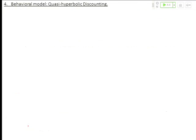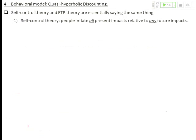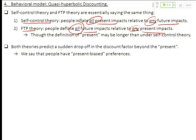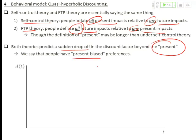Okay, so we have some psychology that suggests that people discount the future and inflate the value of the present. Here's how we can get that into our model. These two theories, self-control theory and future-time perspective theory, are saying the same thing. They're saying it in different ways. Self-control theory says people inflate present impacts relative to any future impacts. The present matters more because I can't really visualize, sorry, self-control theory, which is about temptation, says that I inflate present impacts because they're tempting. Future-time perspective theory says that people deflate all future impacts relative to any present impacts. These things are, and it's actually the same thing. Psychologically, they're very different, but in terms of just this basic inflation and deflation, they're the same. Both theories predict a sudden drop-off in the discount factor beyond some point in time defined as the present. Either way, we say that people have present-biased preferences.